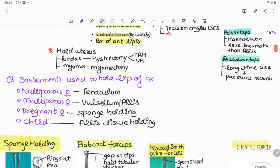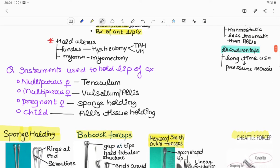So there are some questions. Number one is instrument used to hold the lip of cervix: in nulliparous female it is tenaculum, in multiparous female it is Valsellum or Allis, in pregnant female it is sponge holding forceps, and in child it is Allis tissue holding forceps.